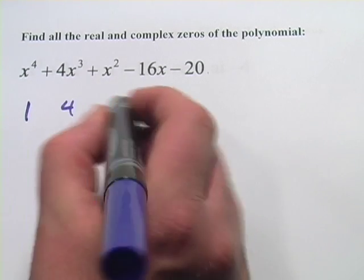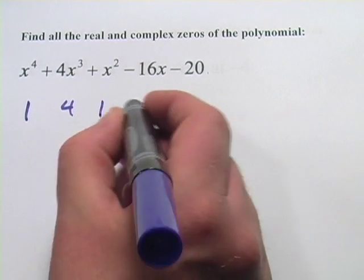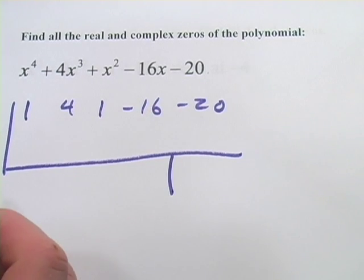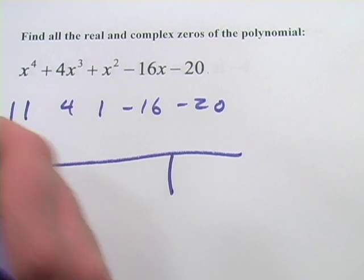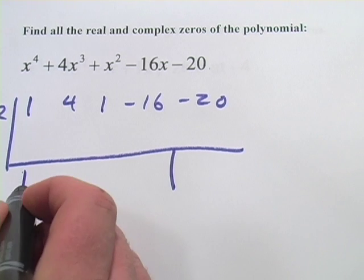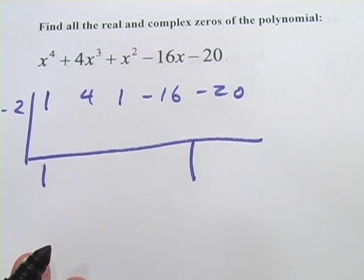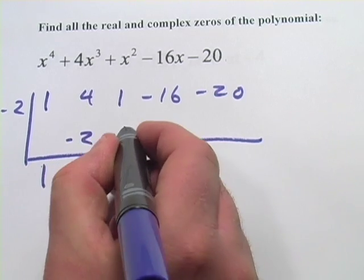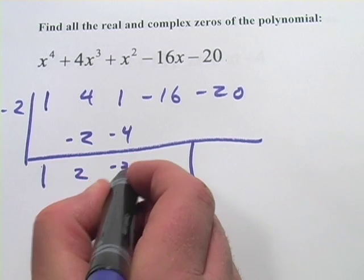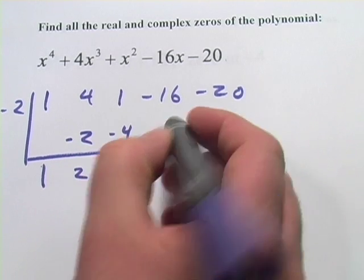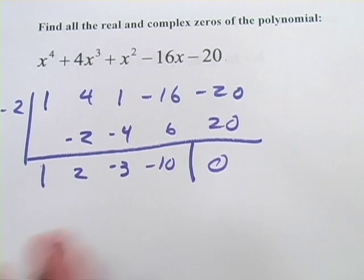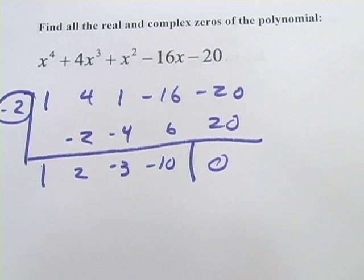We'll set this up. And what would be a likely candidate here? I'm going to try a negative 2, see what happens. Oh, that's looking good. So that's a positive 20. So we found one. We've got negative 2 as a 0.